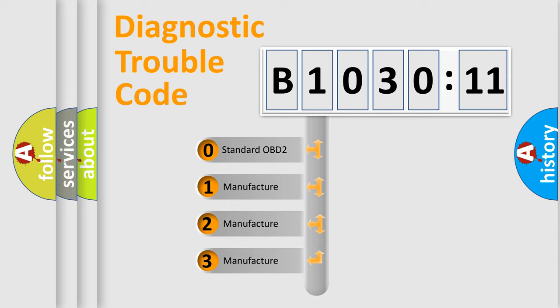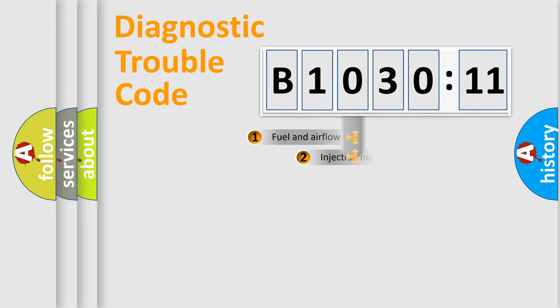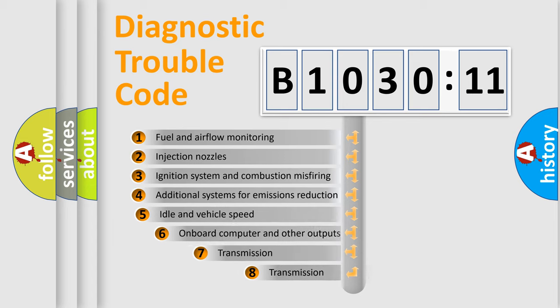If the second character is expressed as zero, it is a standardized error. In the case of numbers 1, 2, 3, it is a manufacturer-specific expression of the car-specific error.